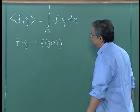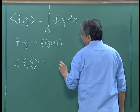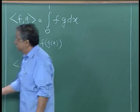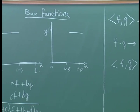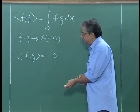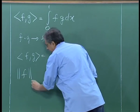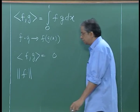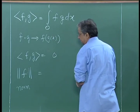So what is ⟨f, g⟩? It is that integral, and as it turns out, because these regions are non-overlapping, this dot product in fact turns out to be 0. You can work out that integral and check that the dot product turns out to be 0. We will come back to this point later.